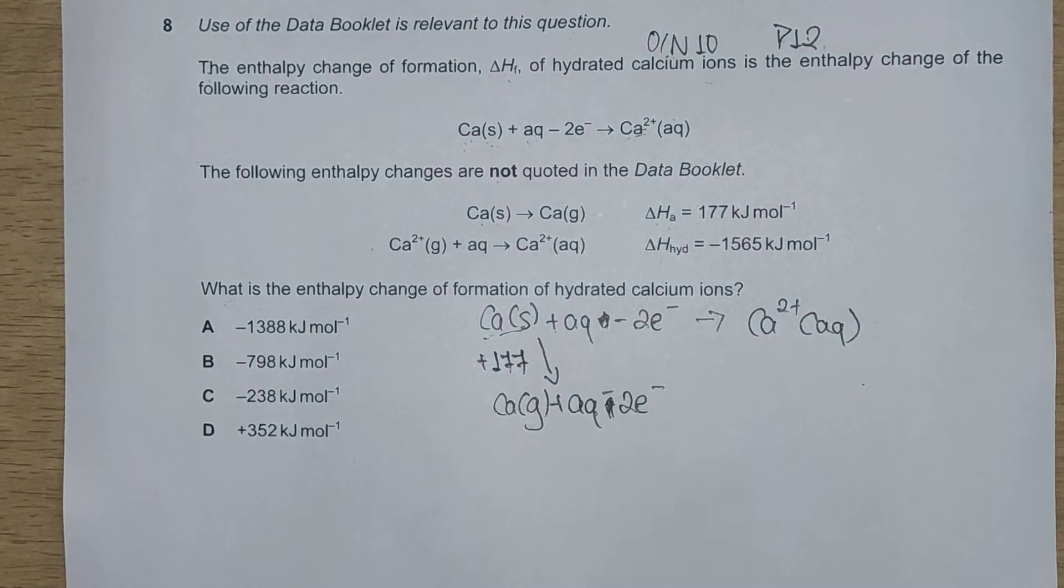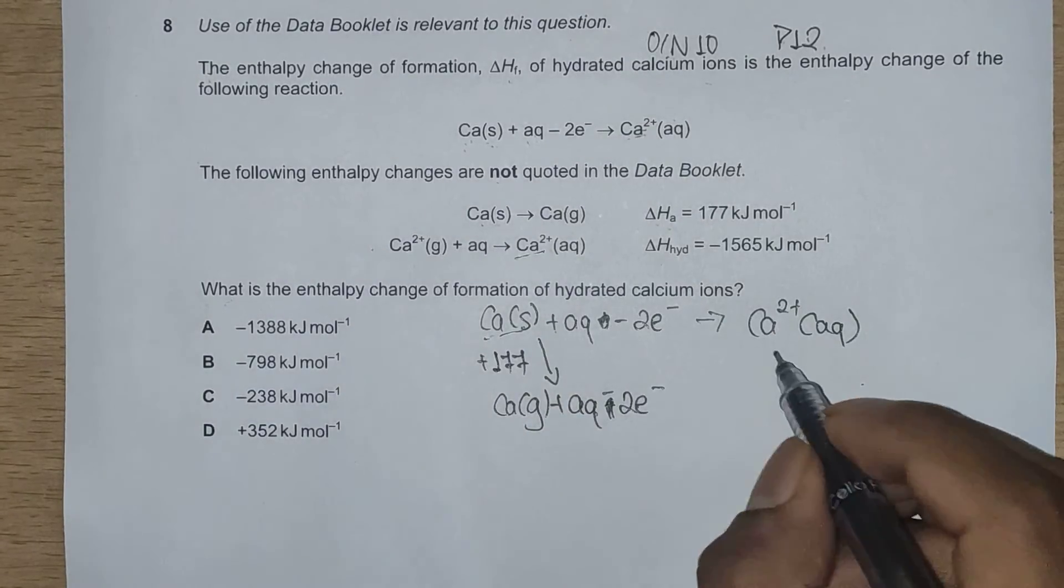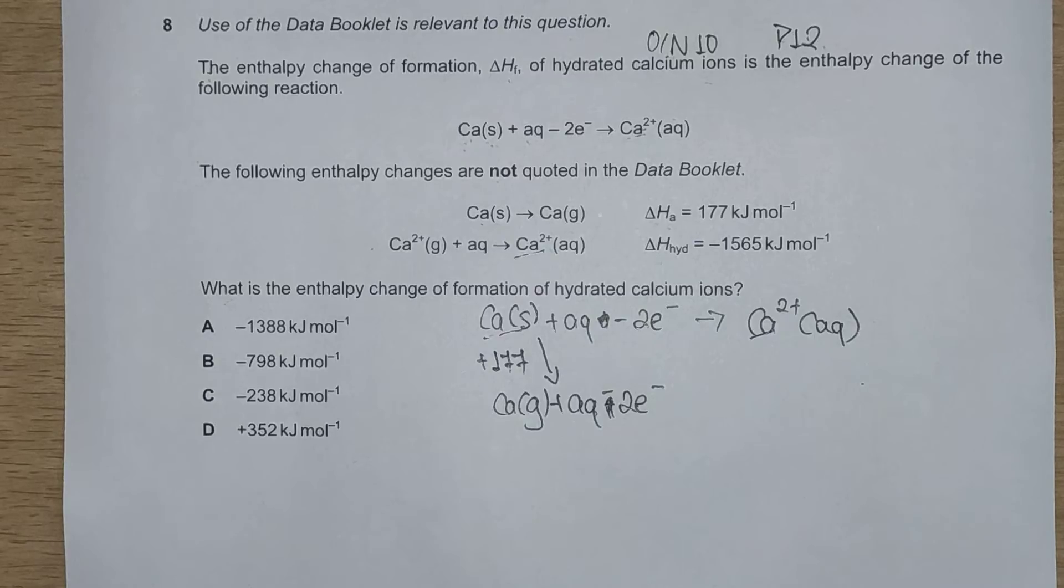Now the next value we are given is Ca 2+ converted, and in the product side also we have Ca 2+, so